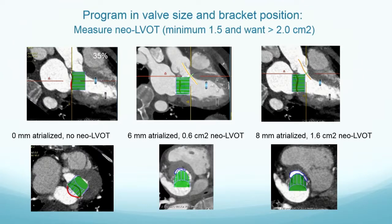We then program in the valve size — this requires special software — and bracket the position. Dr. Guerrero talked a lot about what the actual LVOT area that's acceptable is, and of course we don't really know. But we will use certain parameters. At 35%, you can see there's complete outflow obstruction when placing the valve with no atrial position. When you put it at 6 millimeters atrialized, you still have very little neo-LVOT. And at 8 millimeters, you barely meet criteria.